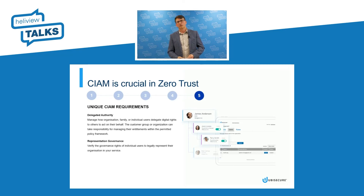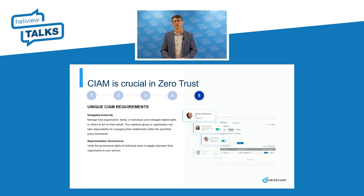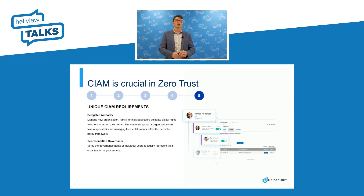And that leads to another topic called representation governance — making sure that the people who are acting on behalf of a company actually have the legal right to do transactions on behalf of the company. Typically this involves things like checking contractual information or government registries. We do that together with our work around legal entity identifiers, which is a global unique identifier for legal entities and organizations.